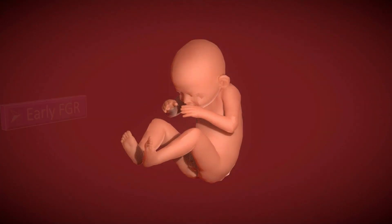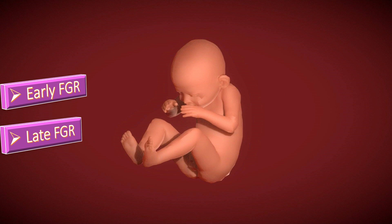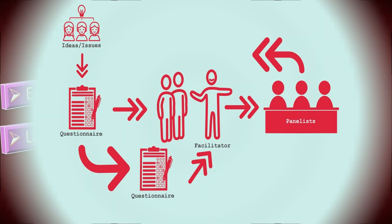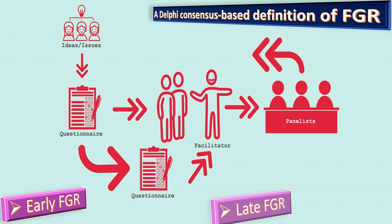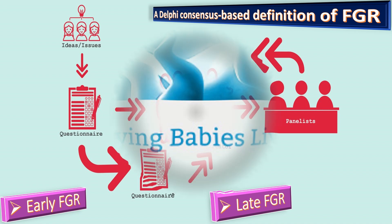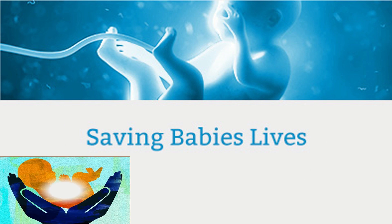Fetal growth restriction can also be subdivided clinically into early and late depending on gestational age, with variation in gestational thresholds between 32 and 37 weeks. The Delphi consensus-based definition of FGR in the 2021–2024 RCOG guideline has been suggested for use both in clinical practice and in research, with early FGR defined as before 32 weeks and late FGR as after 32 weeks.